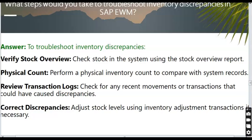What steps would you take to troubleshoot inventory discrepancies in SAP EWM? To troubleshoot inventory discrepancies: verify stock using the stock overview report, perform a physical inventory count to compare with system records, review transaction logs for any recent movements or transactions that could have caused discrepancies, and correct discrepancies by adjusting stock levels using inventory adjustment transactions if necessary.